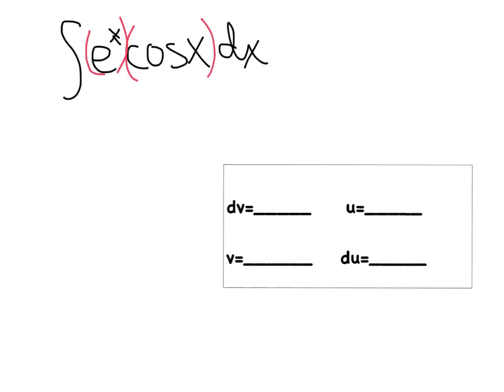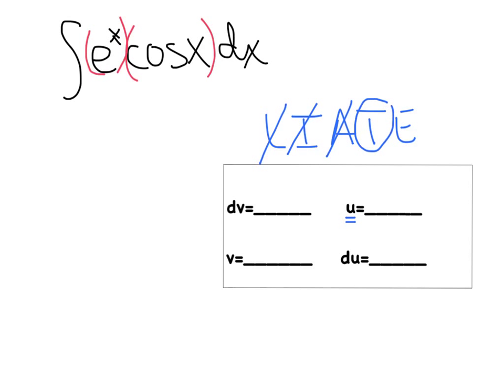The traditional approach we're used to doesn't work here. Using LIATE to pick u: is there a log function? No. Inverse trig? No. Algebraic function? No. This is probably as deep on the list as we've gotten in a long time. Is there a trig function? Yes — so I'm going to let u equal cosine.